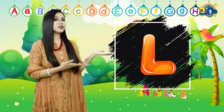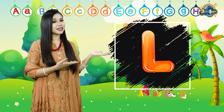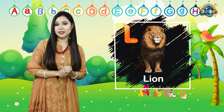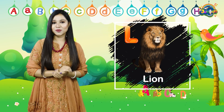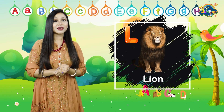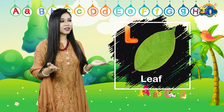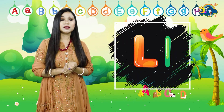What do you see on screen? What's the letter? It's L. L for lion. Make a lion face. L for lion. L for leaf. Now it's time for making the sound. The sound of L is L.